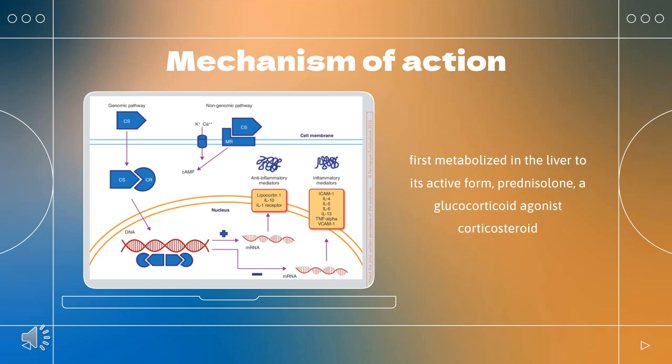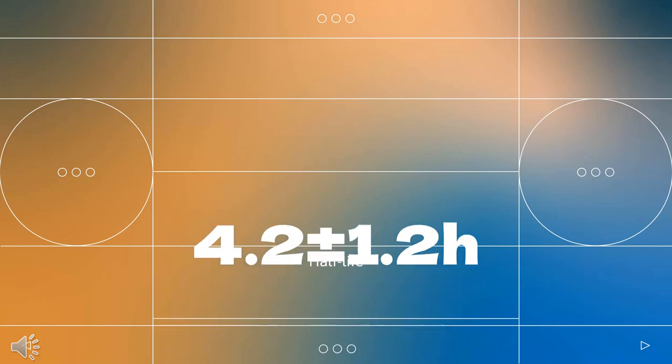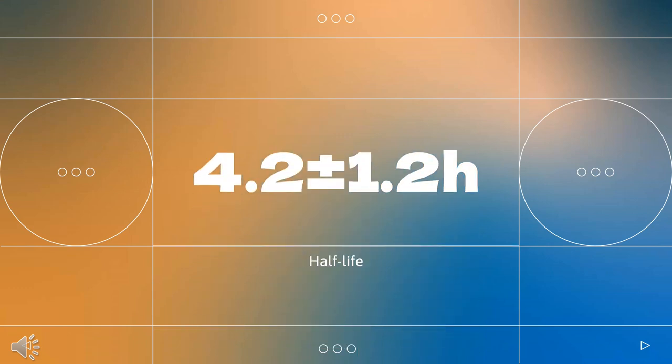Lower doses of corticosteroids provide an anti-inflammatory effect, while higher doses are immunosuppressive. High doses of glucocorticoids for an extended period bind to the mineralocorticoid receptor, raising sodium levels and decreasing potassium levels. The mean terminal half-life of a 20 mg oral tablet is 4 hours. A 1.5 mg oral dose of dexamethasone has a half-life of 6.6 ± 4.3 hours, while a 3 mg intramuscular dose has a half-life of 4.2 ± 1.2 hours.